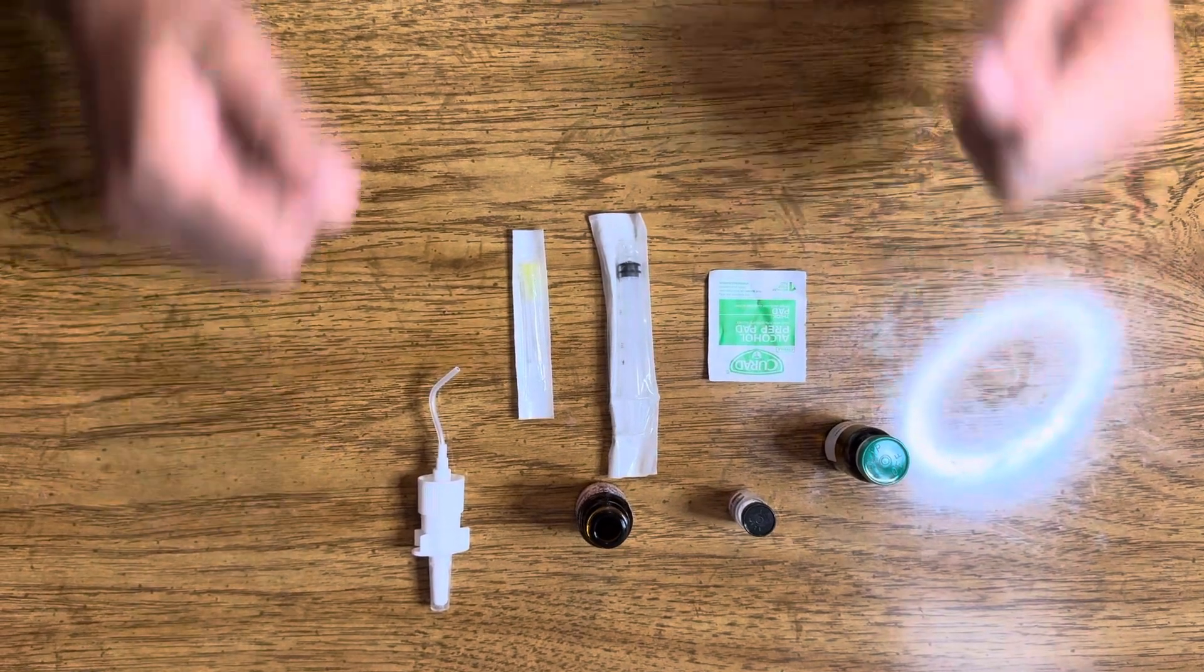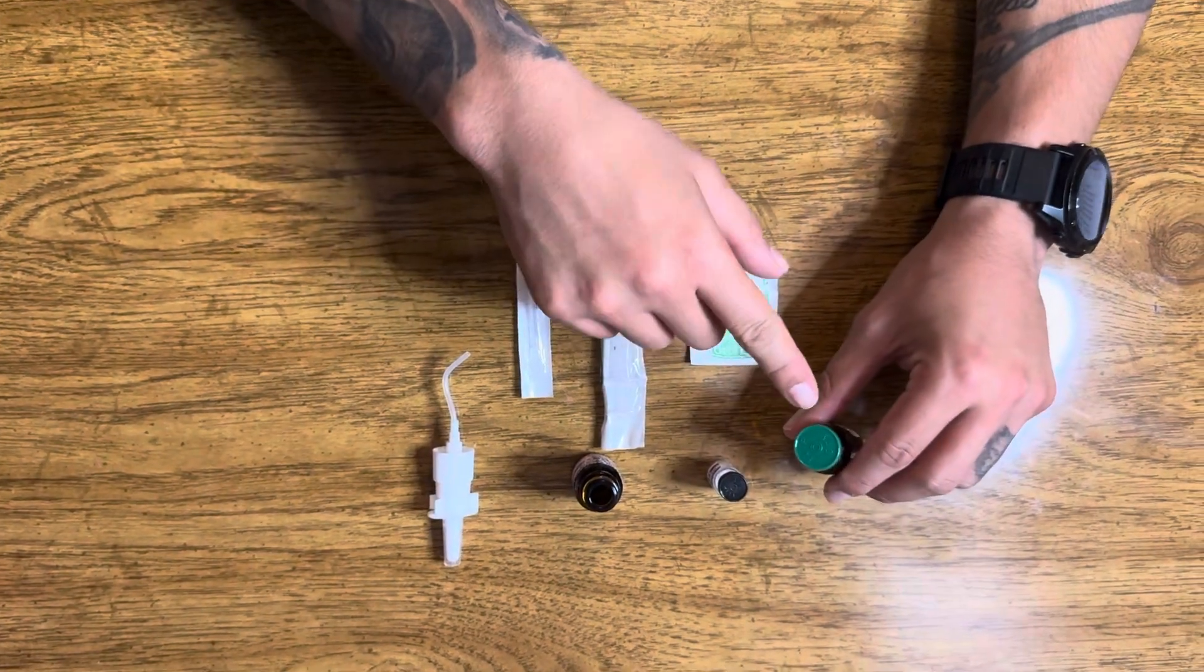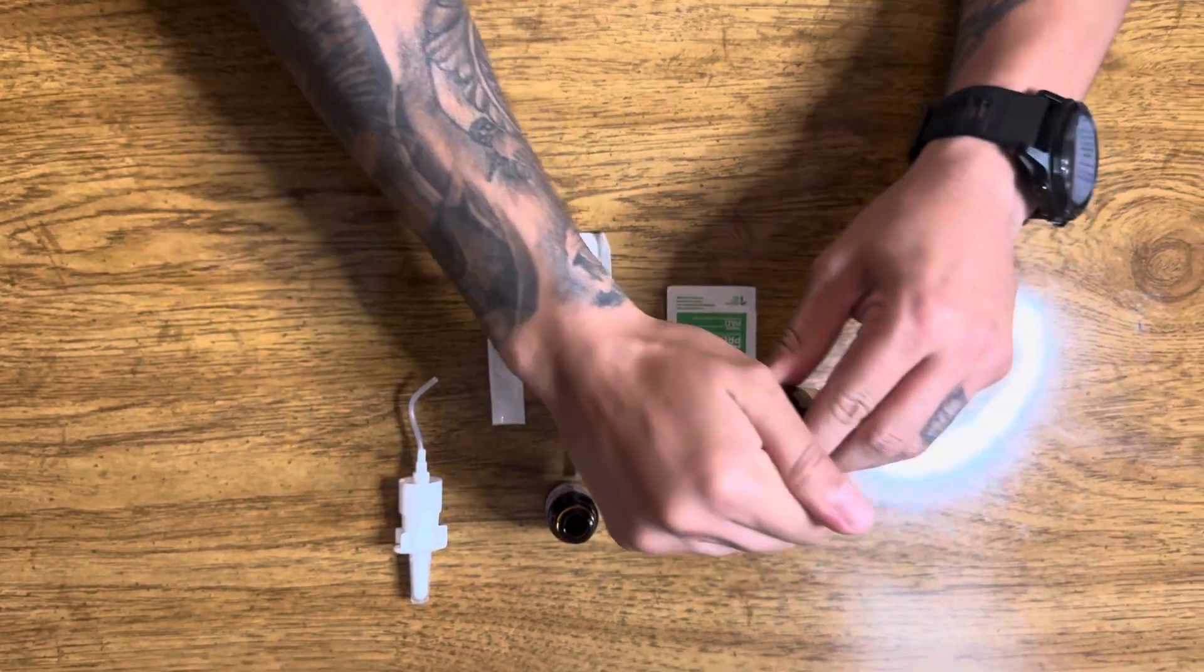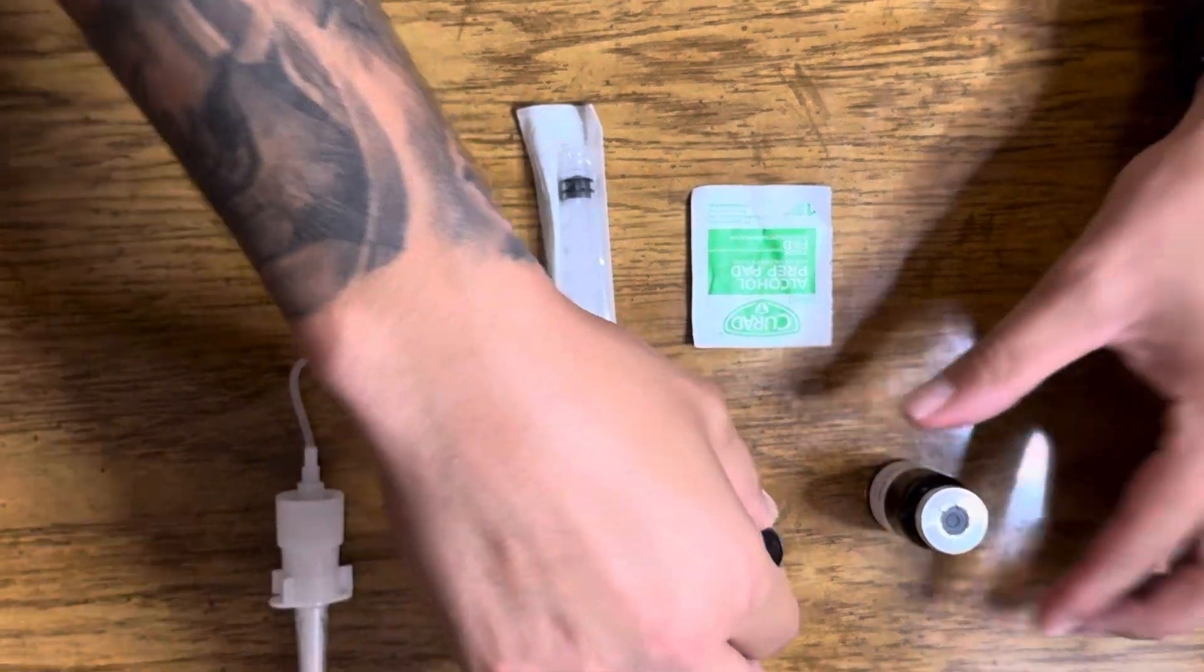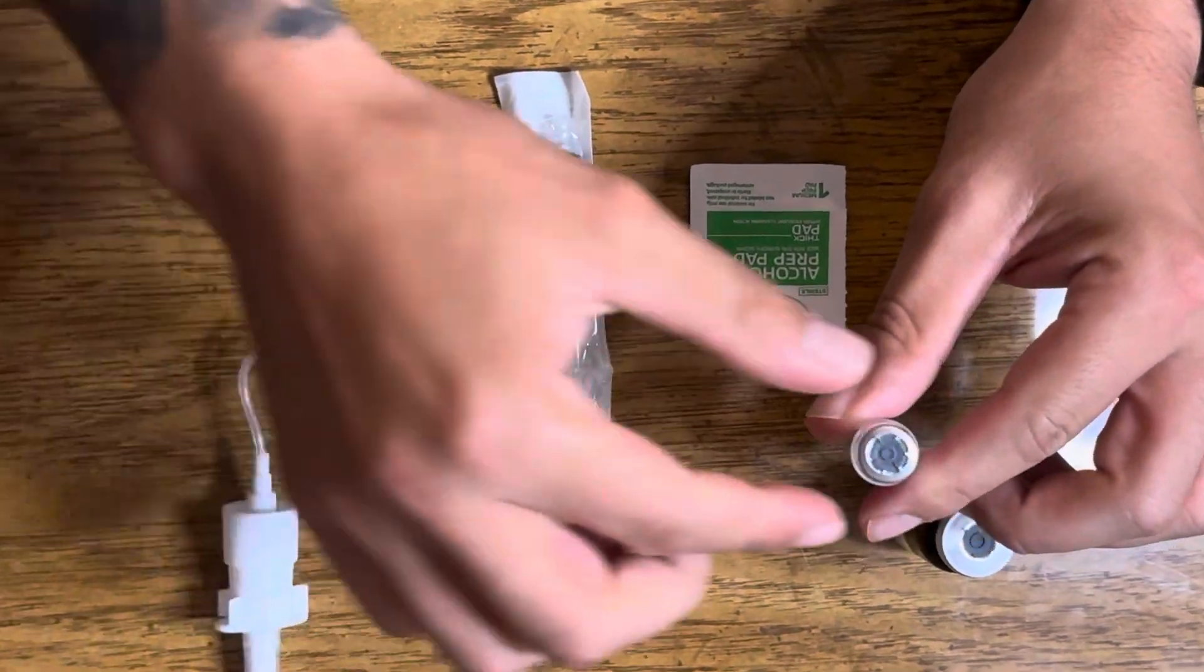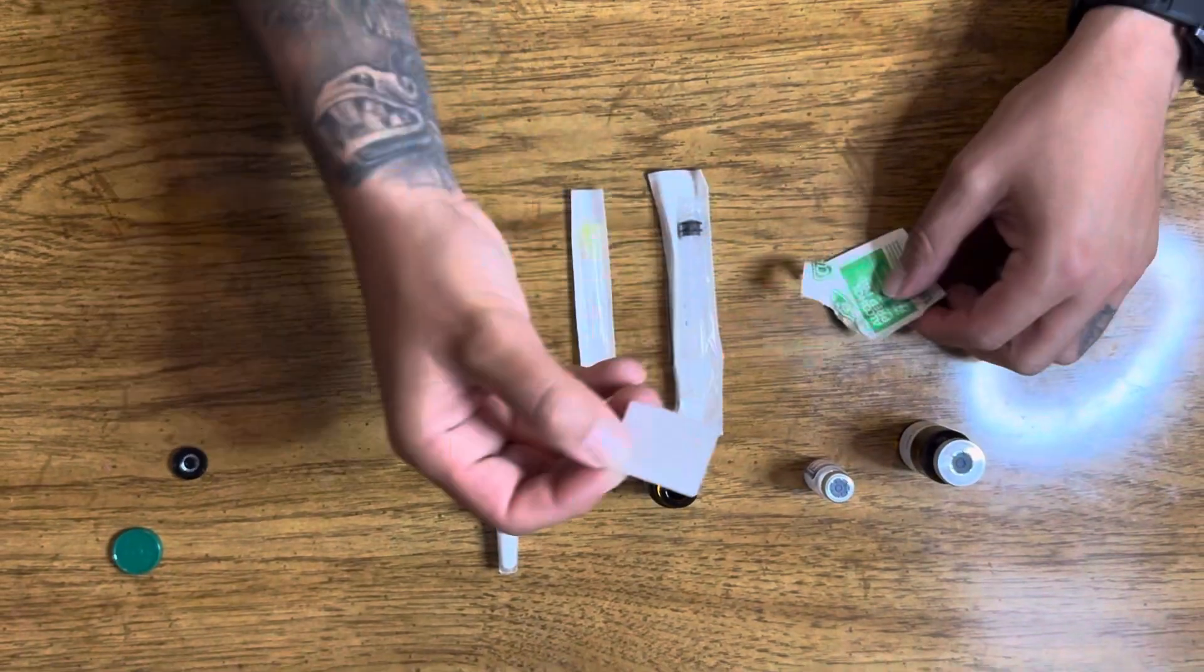The first step is going to be to remove the plastic stoppers from the peptide and from the water. You just pull it out, move to the side, pull it out, move it to the side.